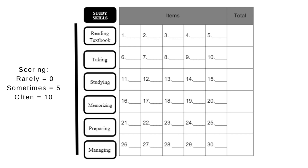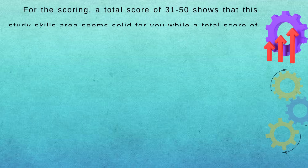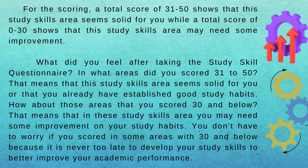What did you feel after taking the study skills questionnaire? In what areas did you score 31 to 50? That means that this study skills area seems solid for you, or that you already have established good study habits. How about those areas that you scored 30 and below? That means that in these study skills areas, you may need some improvement on your study habits. You don't have to worry if you scored in some areas with 30 and below, because it is never too late to develop your study skills to better improve your academic performance.